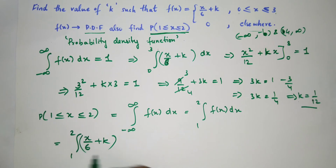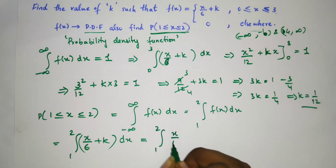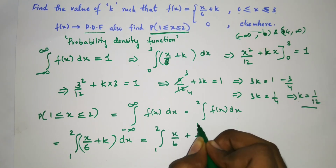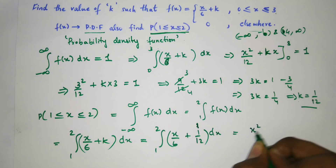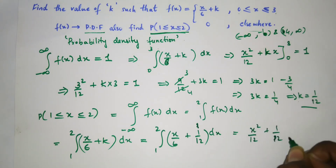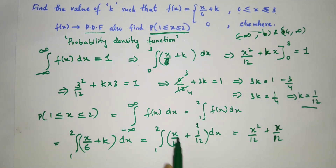We substitute k = 1/12 and compute the integral from 1 to 2 of (x/6 + 1/12) dx. Integrating: x/6 gives x²/12, and 1/12 is a constant so it gives x/12. So we evaluate [x²/12 + x/12] from 1 to 2.